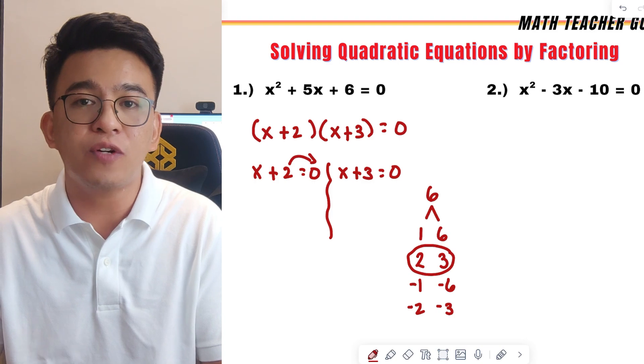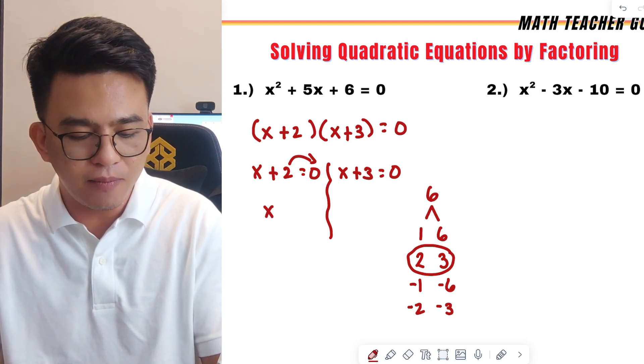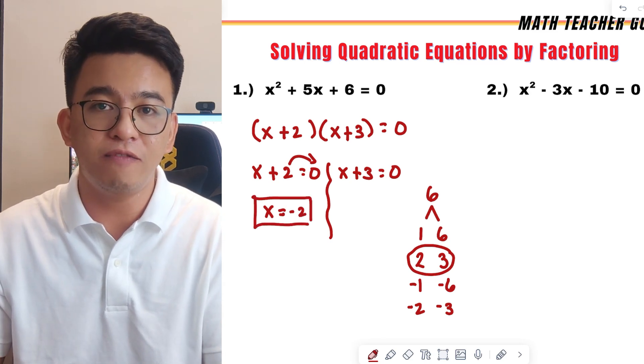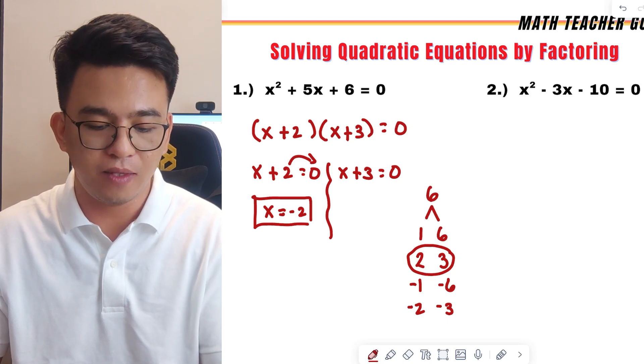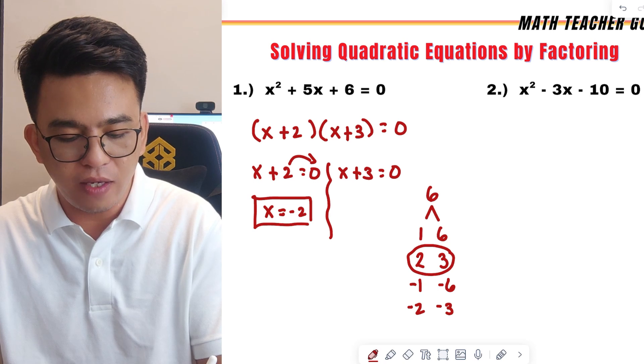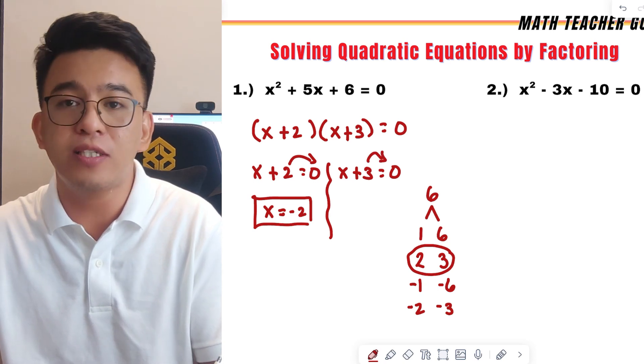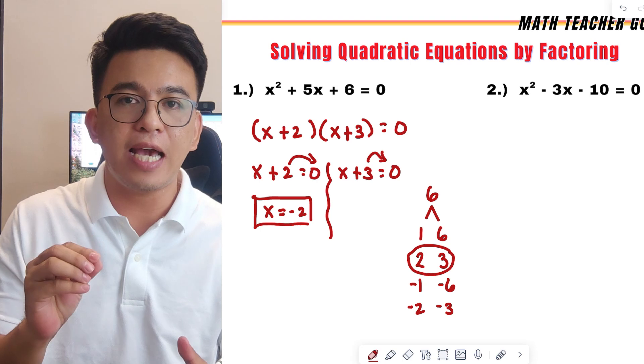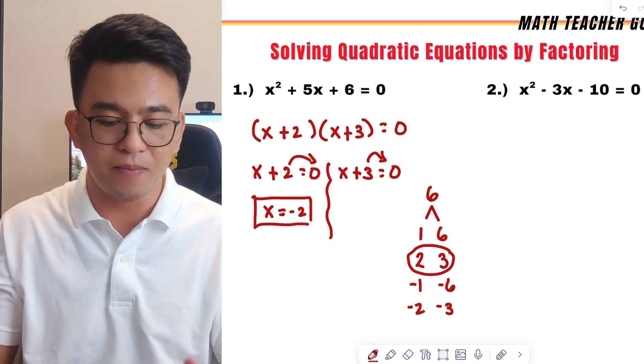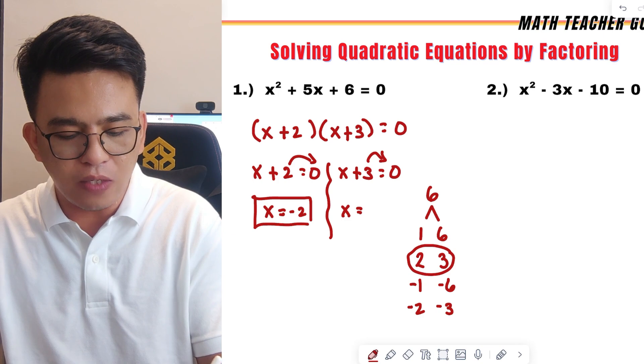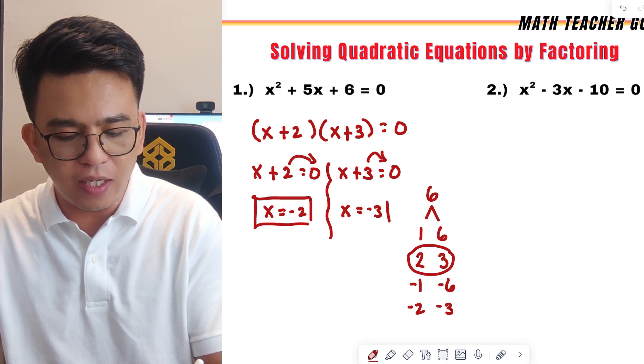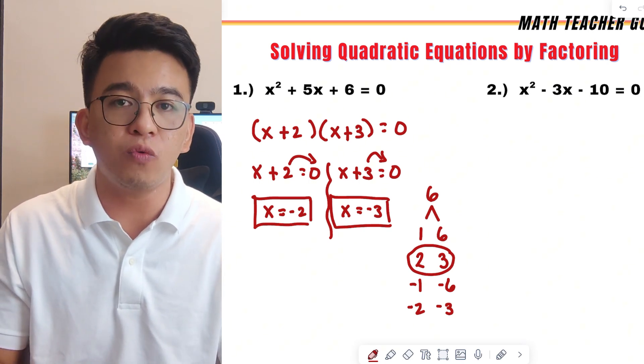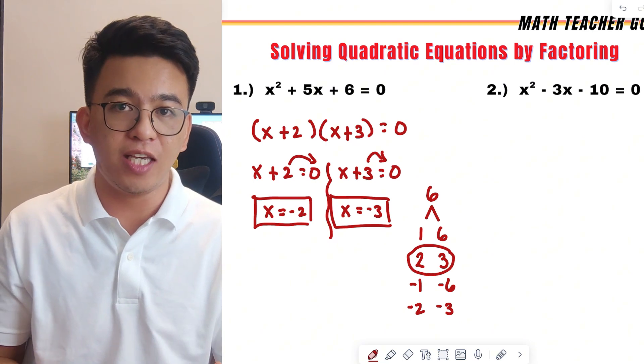For the shortcut, I will transpose 2 and it will become x is equal to negative 2. And this is now the first value of x. Next, we have this one, transpose 3 to the other side. Remember, when you are transposing a term, what happens is the sign changes. So, this one will become x is equal to negative 3. So, right now, we have two possible values of x, which is negative 2 or negative 3.